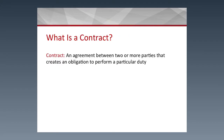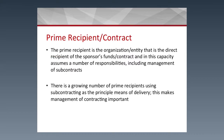What is a contract? A contract is an agreement between two or more parties that creates an obligation to perform a particular duty. In this case, we have a subcontractor and a prime recipient. The prime recipient is the organization or entity that is the direct recipient of the sponsor's funds and therefore the direct recipient of a contract. In this capacity, it assumes a number of responsibilities, including managing the subcontractor. There is a growing number of prime recipients who use a subcontractor, which is why subcontractor management is so important.